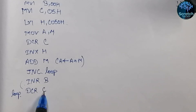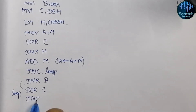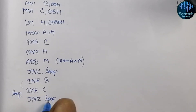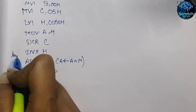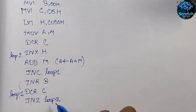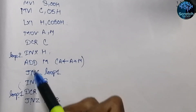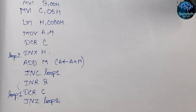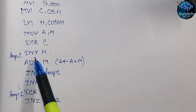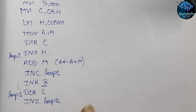If no carry is generated, we directly decrement the content of C. Then we check whether the content of C equals zero or not using JNZ — if C is not zero, control jumps back to the loop location labeled Loop 1, so we fetch the next data and add it to the accumulator. This loop repeats until all elements in the array are added. After all elements are added, the result is in the accumulator and the carry part is stored in register B.